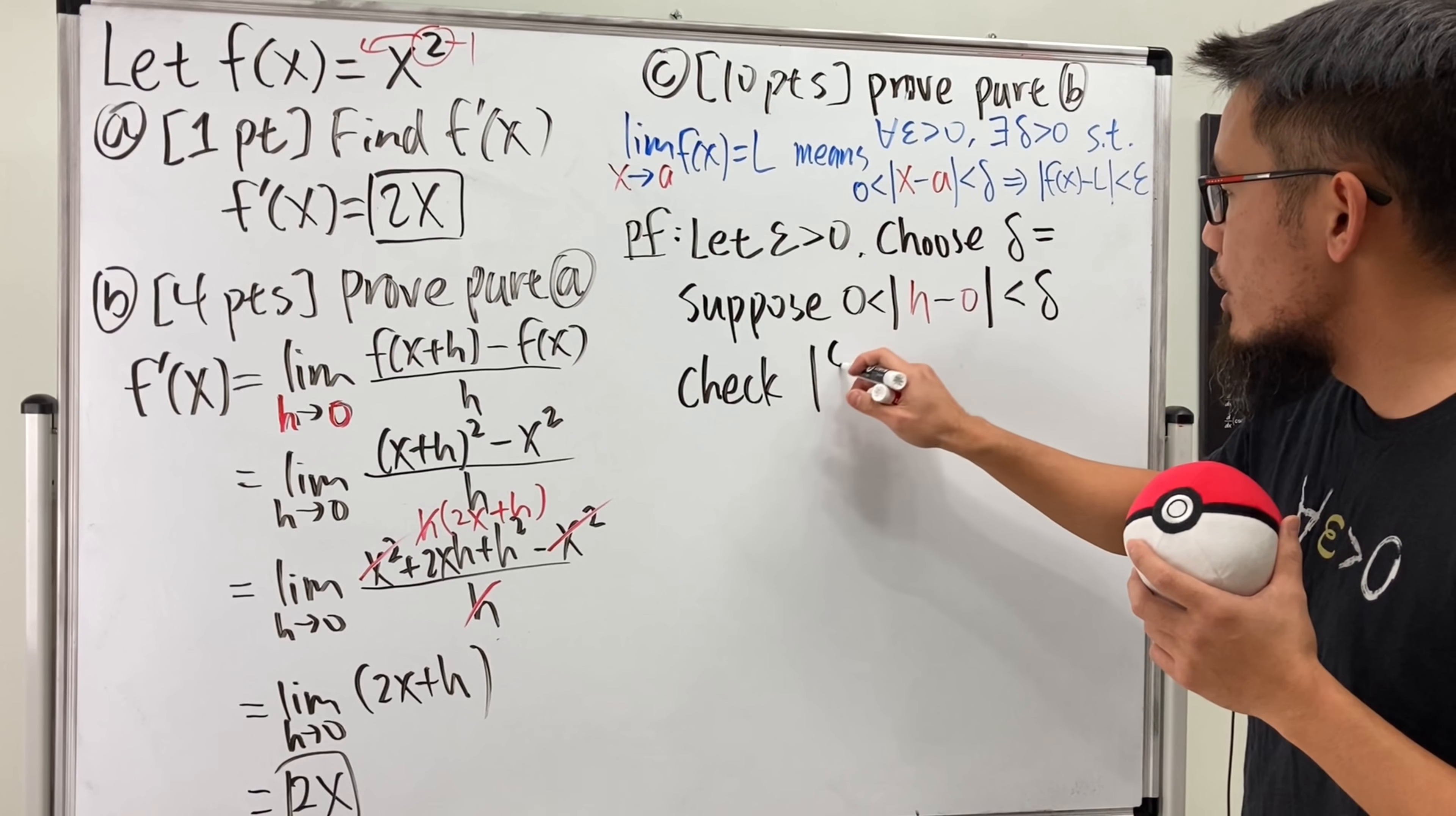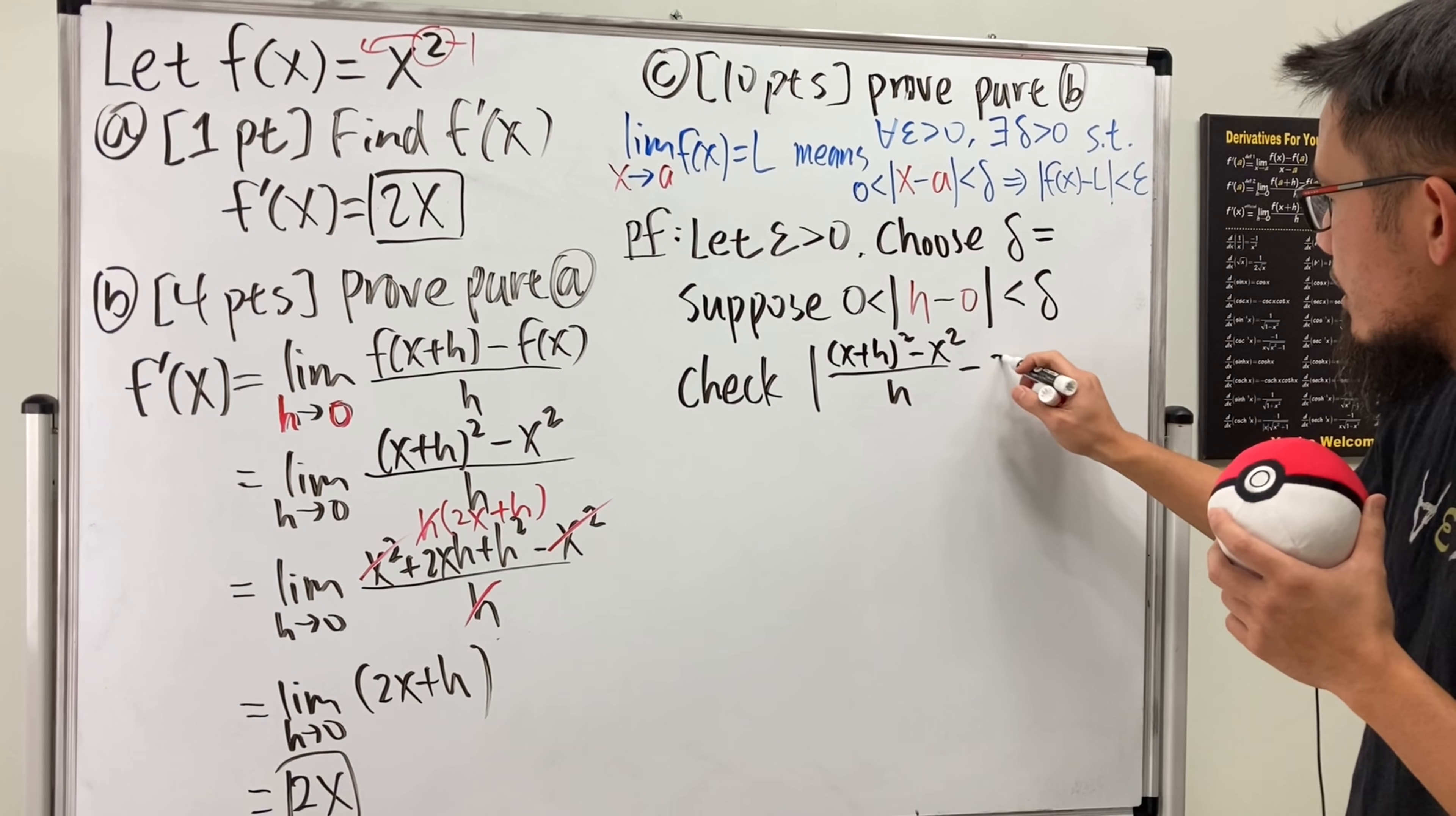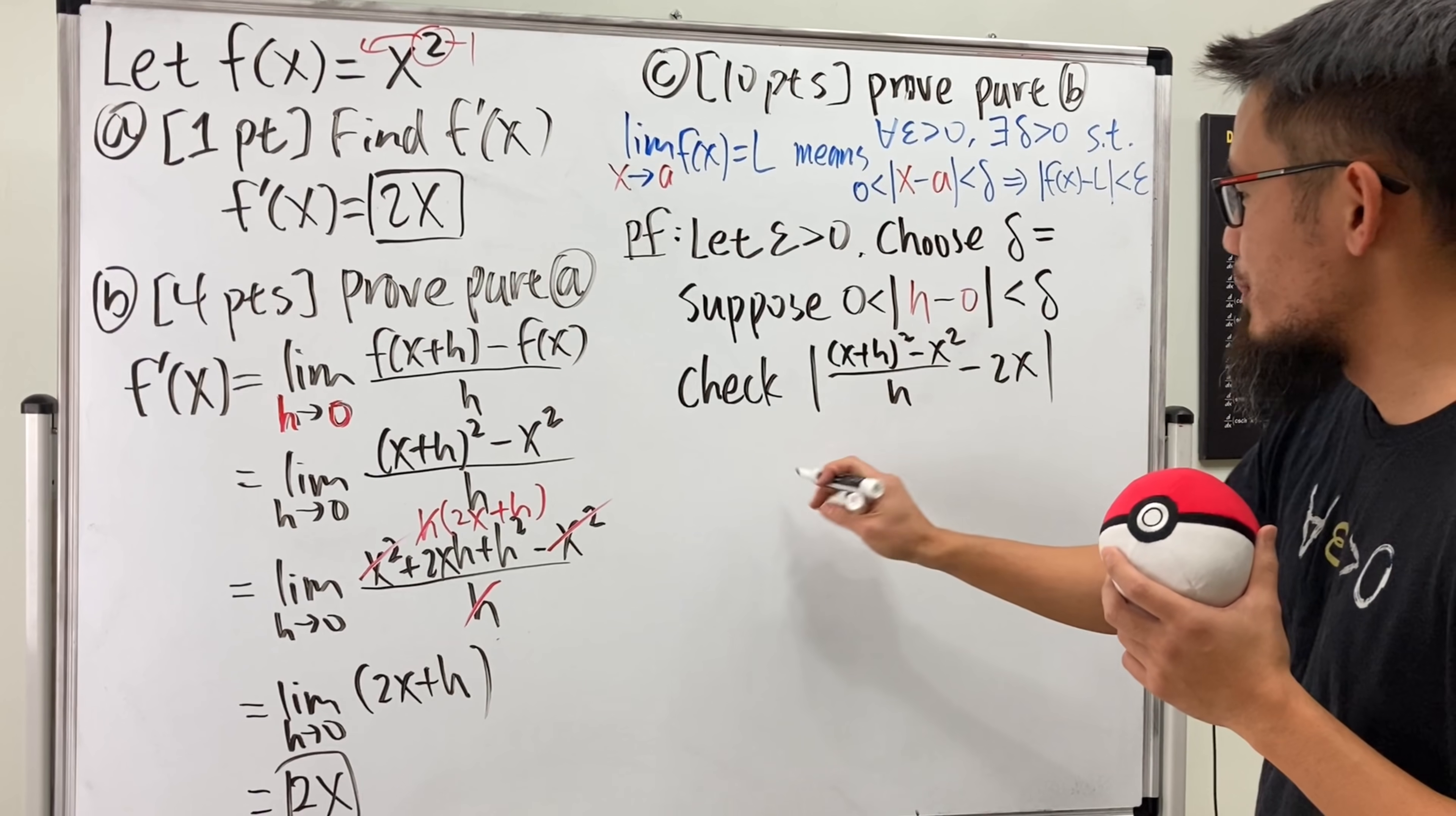So we get [(x+h)² - x²]/h, and then minus our answer, 2x. We have to check if this inequality will be less than epsilon. Have a look.